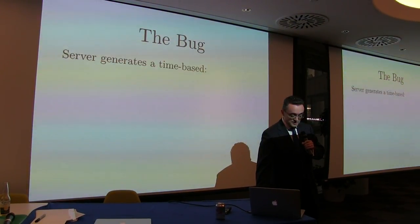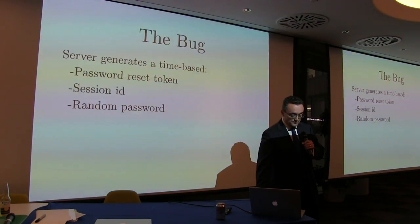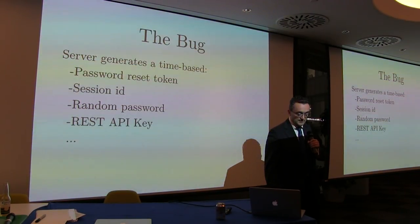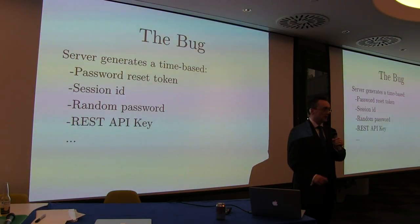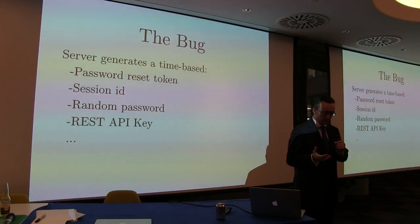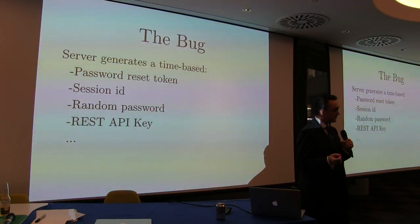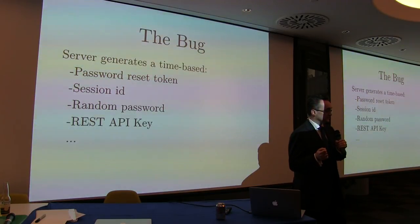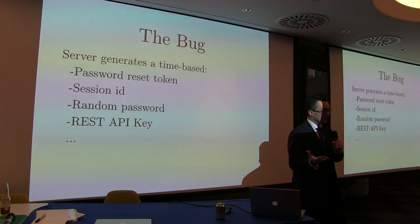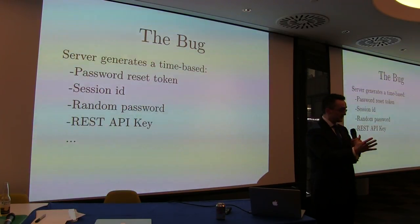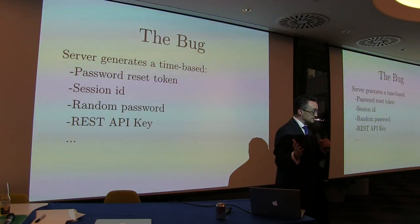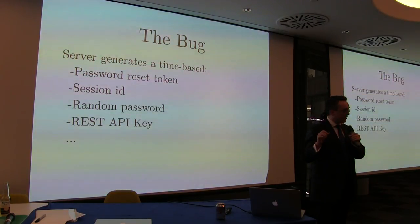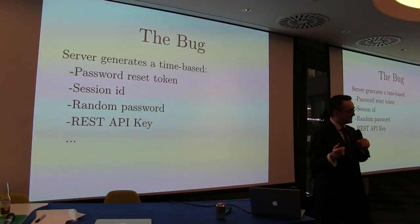The situation I'm describing is where someone generates a supposedly random token or password, a REST API key, something like that, using a pseudo-random number generator seeded with the time, or some functions of the time, or just the time. That might sound like a silly thing to do with a security system, but as developers it happens all the time, because these things are often hidden in generation functions.